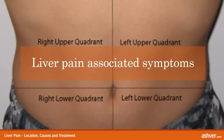Liver pain associated symptoms: Symptoms of liver pain are varied and many, and tend to go unnoticed in the beginning. Liver pain is accompanied by many other symptoms such as: yellowing of the skin and eyes, sharp and stabbing pain, excessive sweating, strong body odor, bad breath, redness of palms and soles accompanied by itching and inflammation, loss of appetite, and joint pain.